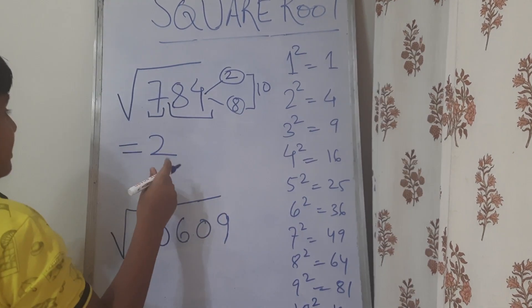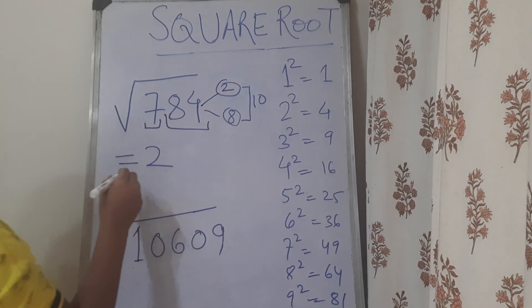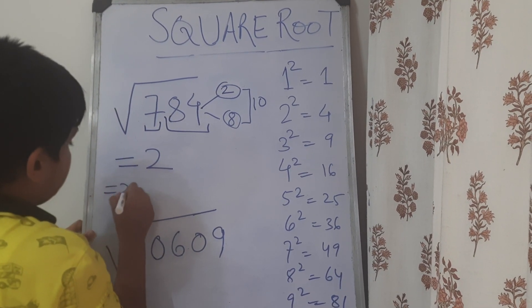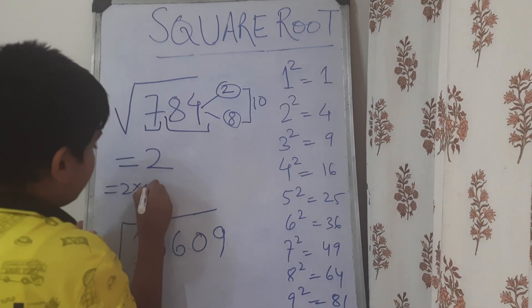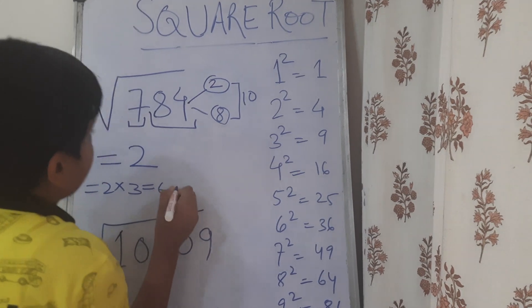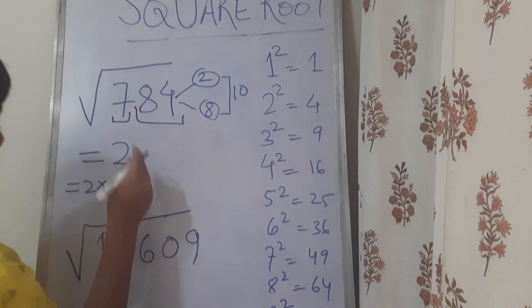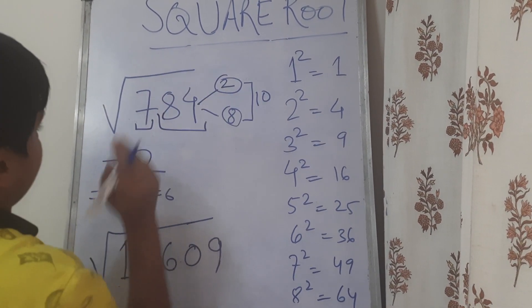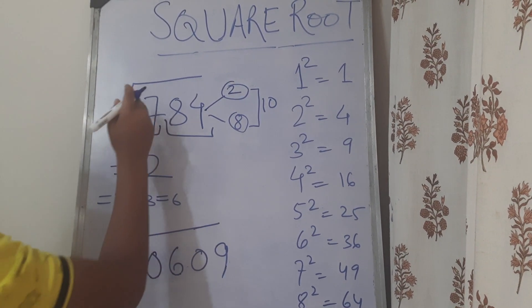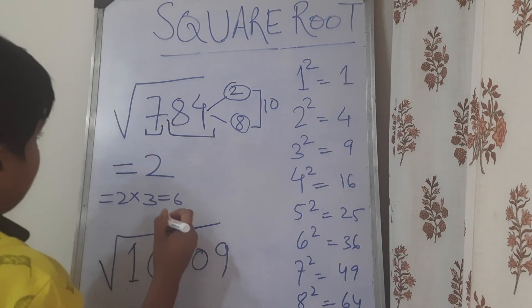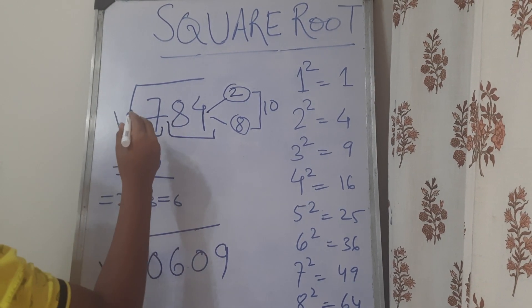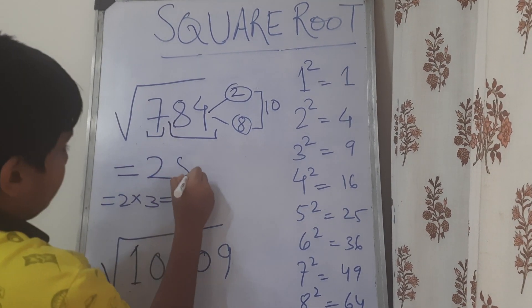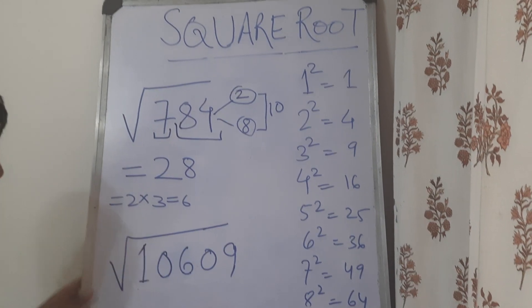Now, to find the next digit, we have to multiply this number with the next number. So, we have 2 into 3 which is 6. Now, if 7 is smaller than this number, we take the smaller digit. If 7 is larger than this number, we take the larger digit. So, now 7 is larger than 6, so we take 8. So, the square root is 28.